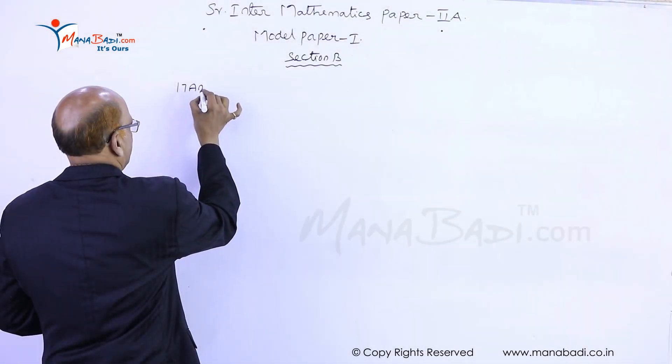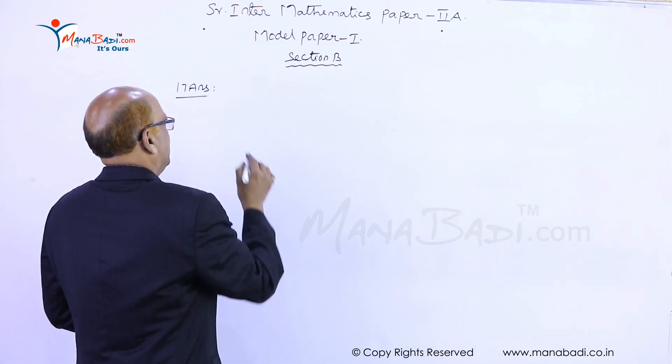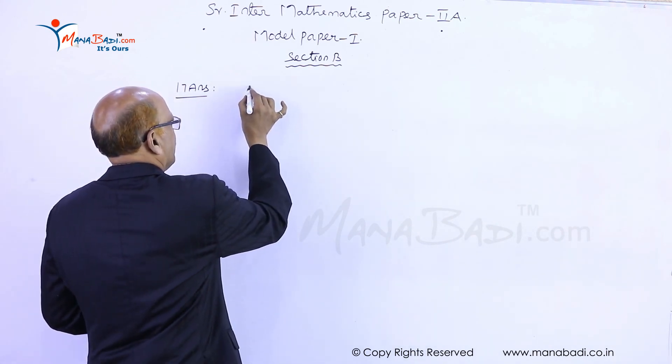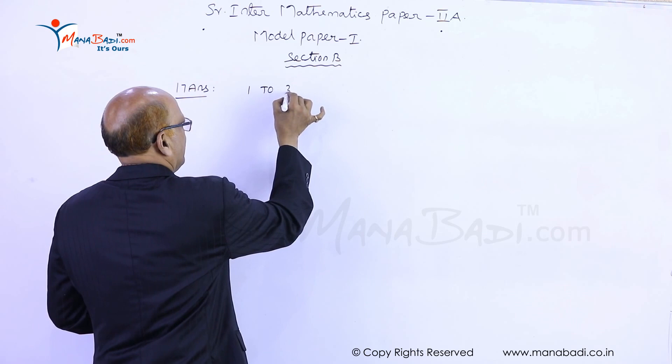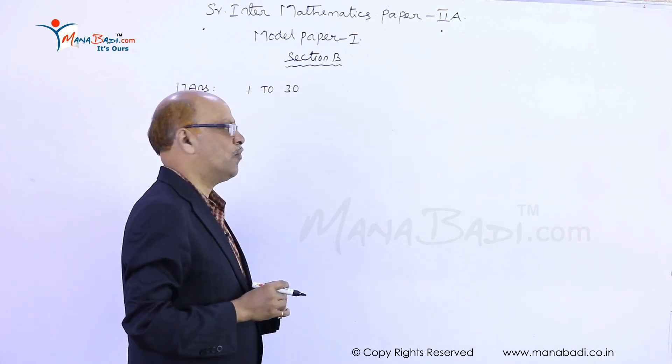17th answer. Ticket numbers are from 1 to 30, so we are selecting one ticket.